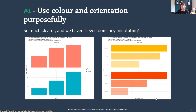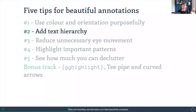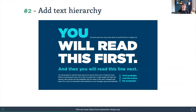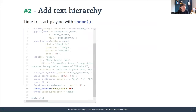Now let's get to annotations. We're going to add text hierarchy to our plot. Text hierarchy means the way we format our text directs readers to what's most important to read, what they can skip, and what the main story is. We can harness that in our plots by playing around with the theme. The first thing we'll do — since text is quite small in these presentations — is make the base size of the text a bit bigger by setting base_size inside theme_minimal.